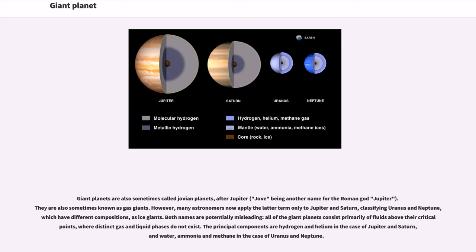which have different compositions, as ice giants. Both names are potentially misleading. All of the giant planets consist primarily of fluids above their critical points, where distinct gas and liquid phases do not exist.